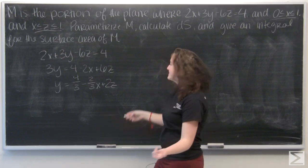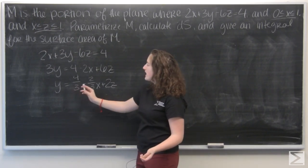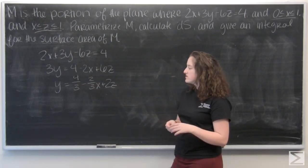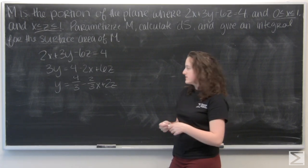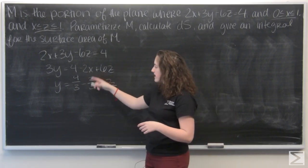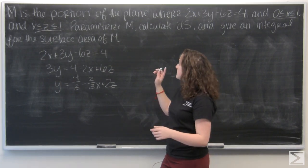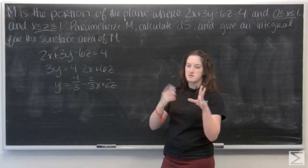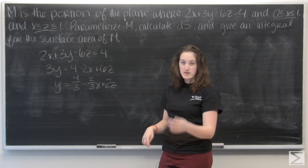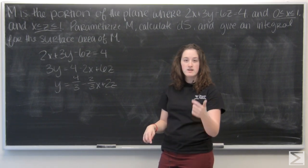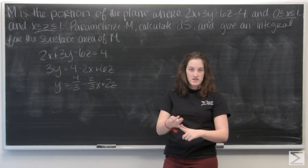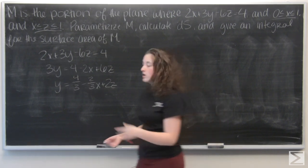Okay, so I'm sure you guys can do this yourself. So y equals 4 thirds minus 2 thirds x plus 2z, right? Move everything to the other side and divide by 3. So the parametrization of M is going to be x, the function of x and z and z. So let me write that out.